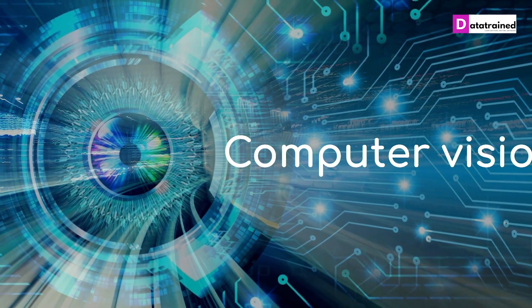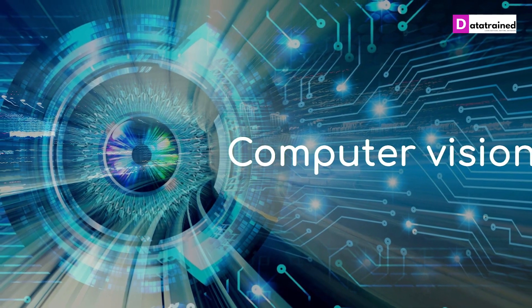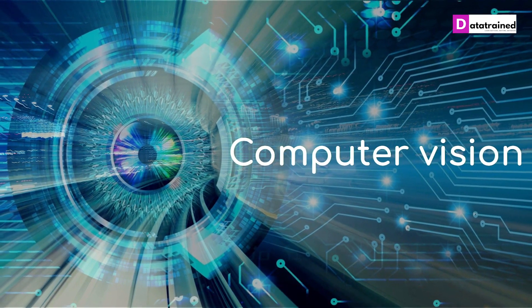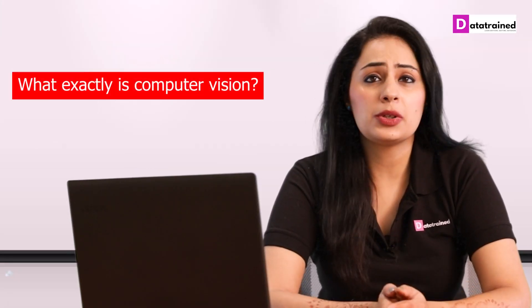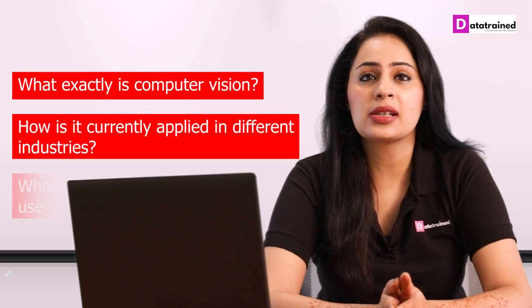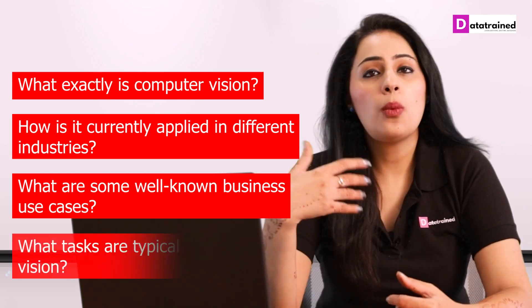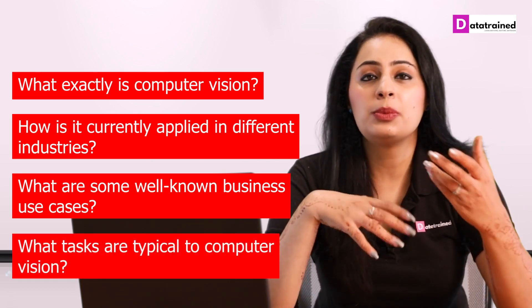Nowadays, computer vision is probably the hottest subfield of artificial intelligence as well as machine learning, provided its wide array of applications and tremendous potential. Its goal is to replicate the powerful capacities of human vision. But what exactly is computer vision? How is it currently applied in different industries? What are some of the well-known business use cases? What tasks are typical to computer vision?